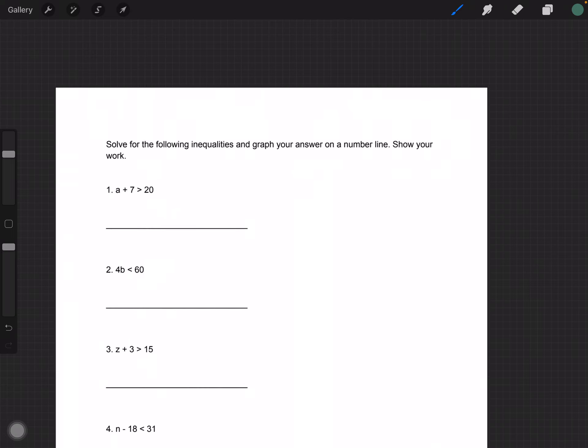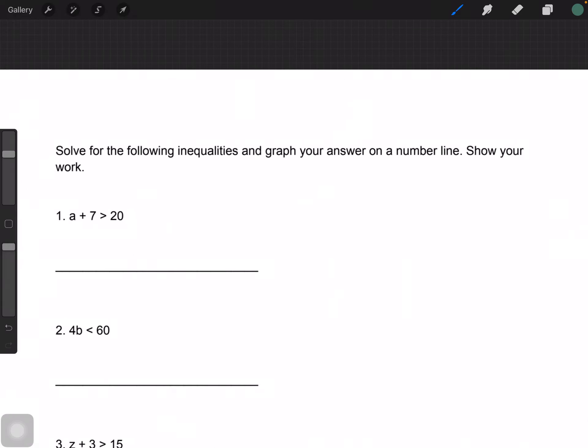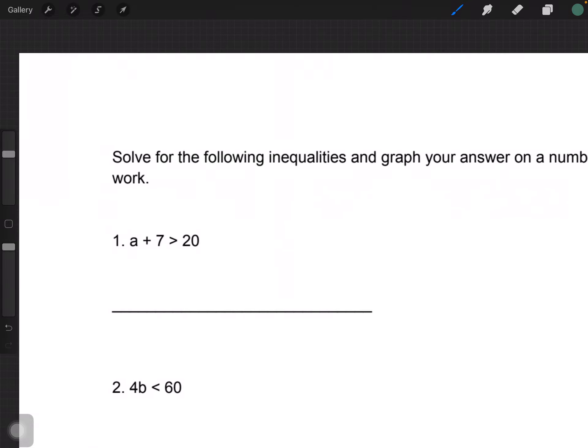So this one is asking us to solve for the following inequalities and to graph the answer on the number line. So solving for the inequalities is very similar, but it means different things. So we also want to isolate the variable, which in this case is A. And so if we act like this inequality sign is an equal sign, we can know that this is how we do it. But then instead of writing an equal sign, you write an equality sign.